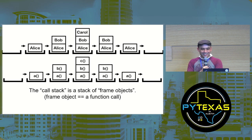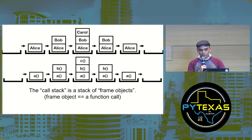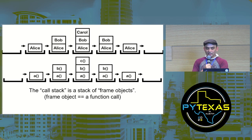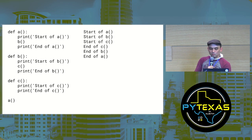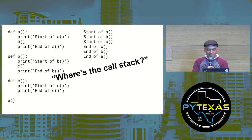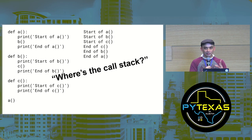The Python interpreter keeps track of function calls with a stack called the call stack. Python puts frame objects on the call stack, and frame objects contain data about where execution should return after a function call. We push a new frame object onto the call stack when a function is called, and pop it off when the function returns. The topmost frame object is the function call currently executing. You can't see the call stack in your code — the Python interpreter handles it automatically behind the scenes.